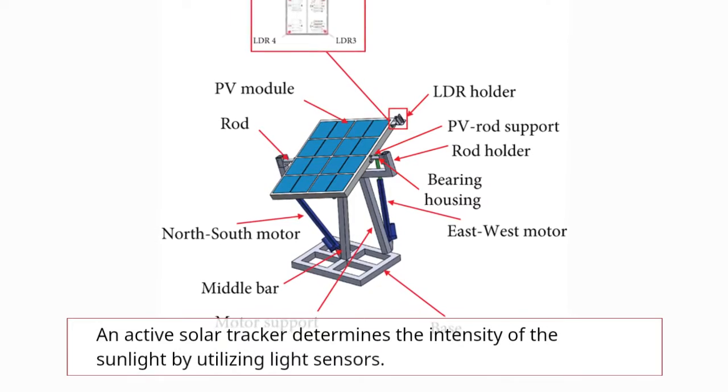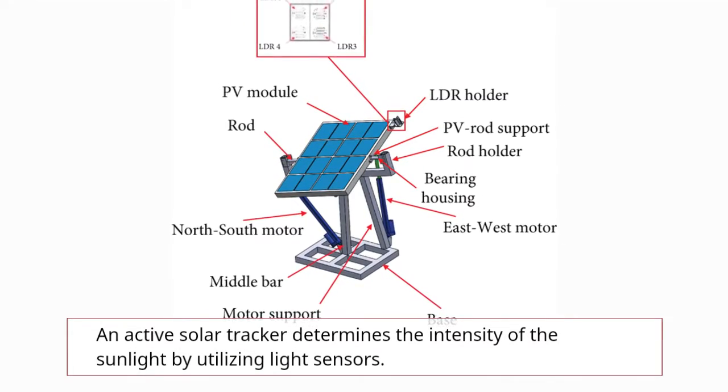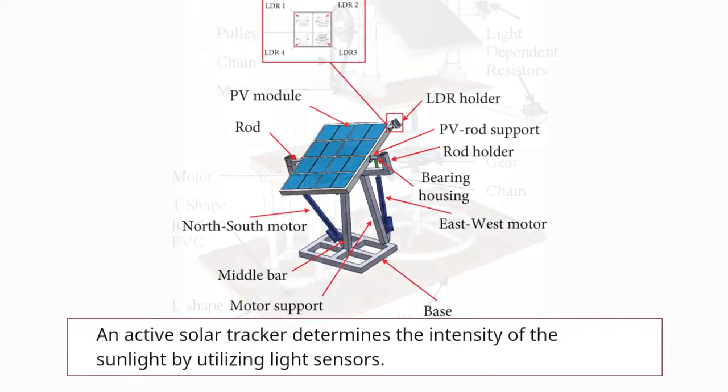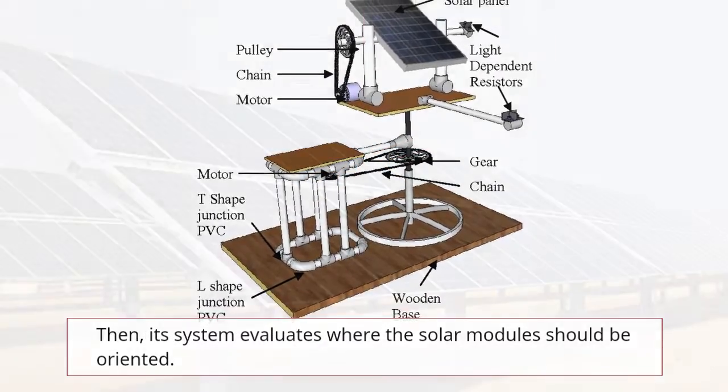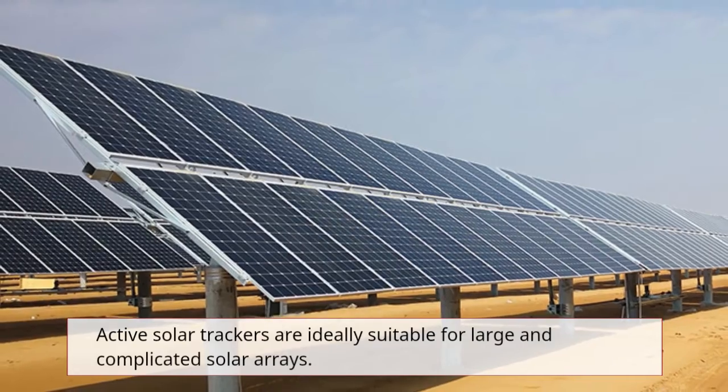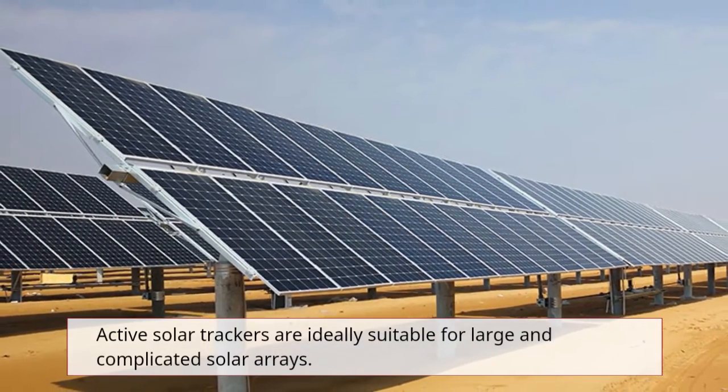An active solar tracker determines the intensity of the sunlight by utilizing light sensors. Then, its system evaluates where the solar module should be oriented. Active solar trackers are ideally suitable for large and complicated solar arrays.